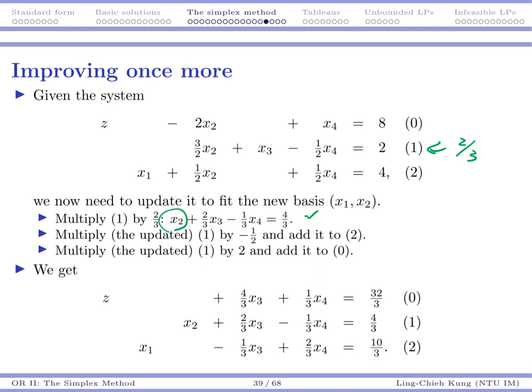And then we would multiply this updated equation 1 by 1 half and then add it to the second row. That's going to eliminate this X2. And we would multiply the updated equation 1 by 2 and add that into the zeros row to eliminate this particular X2.